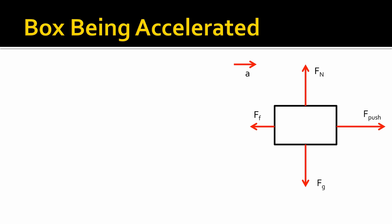Let's see how this works. We have a box being accelerated to the right, and we have these forces on it — this is our free body diagram. Let's see how we get a net force equation out of it. Starting in the x direction, we have two forces: F push and force of friction. The direction of acceleration is to the right, so F push is going to be our positive force because it's also pointing right, and force of friction is going to be negative because it's pointing left.